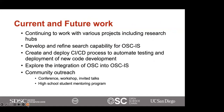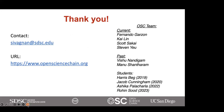The current status is that we are continuing to work with various projects, including research hubs. We still need to develop and refine our search capability for Open Science Chain IS. We are working on creating and deploying a CI/CD process to automate testing and deployment of new code development, especially as we add more functions to the chain code. We want to explore integration of the original Open Science Chain portal framework with OSCIS to merge information from the two blockchains. We have been doing community outreach through participation in conferences, workshops, and talks such as this one, and we participate in a high school student mentoring program every summer.